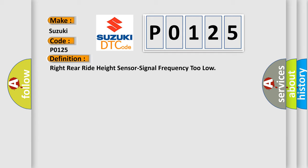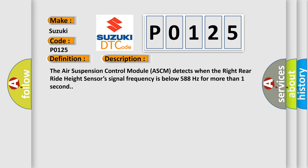The basic definition is: Right rear right height sensor signal frequency too low. And now this is a short description of this DTC code. The air suspension control module ASCM detects when the right rear right height sensor signal frequency is below 588 hertz for more than one second.